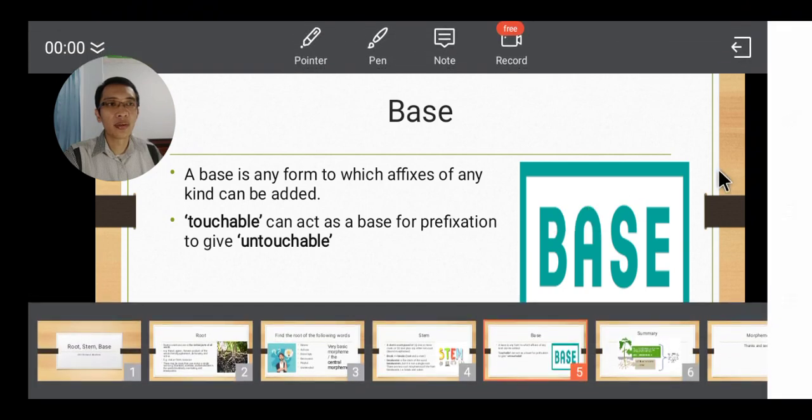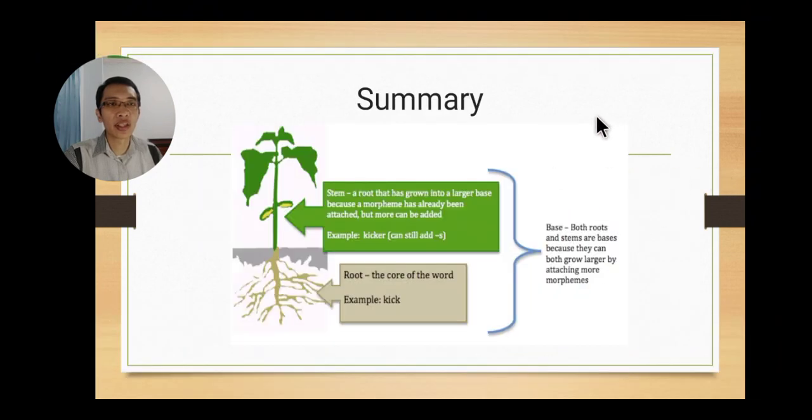In summary, we can see this picture that from this picture of a plant, stem is a root that has grown into a larger base because a morpheme has already been attached, but more can be added. For example, when we have kicker and we need to have a plural form of kicker, then we can add -s at the end, so it's going to be kickers.